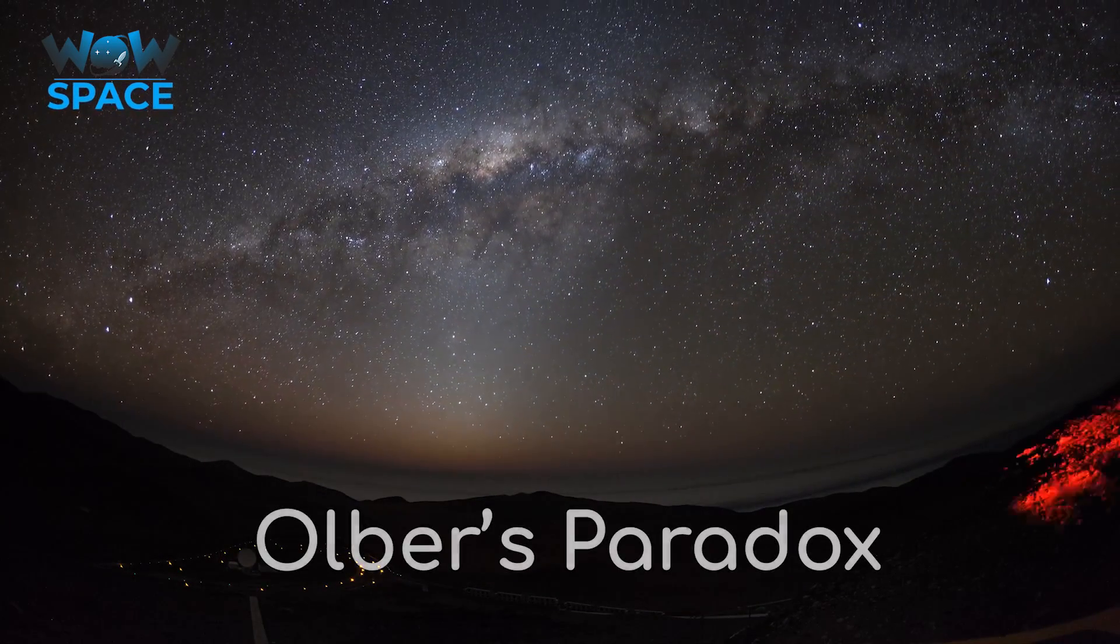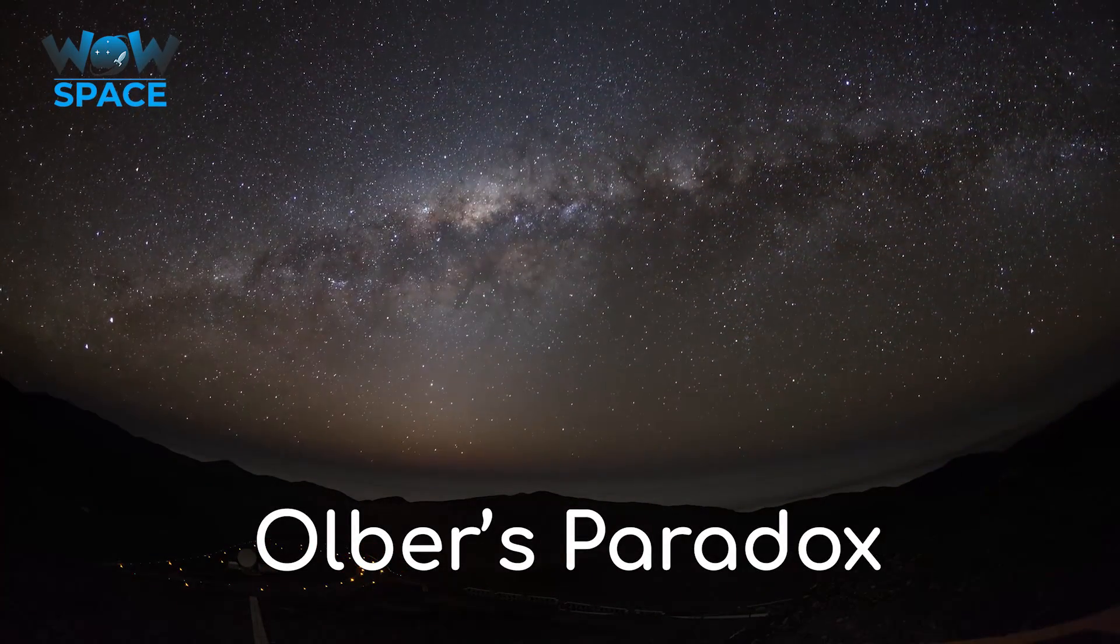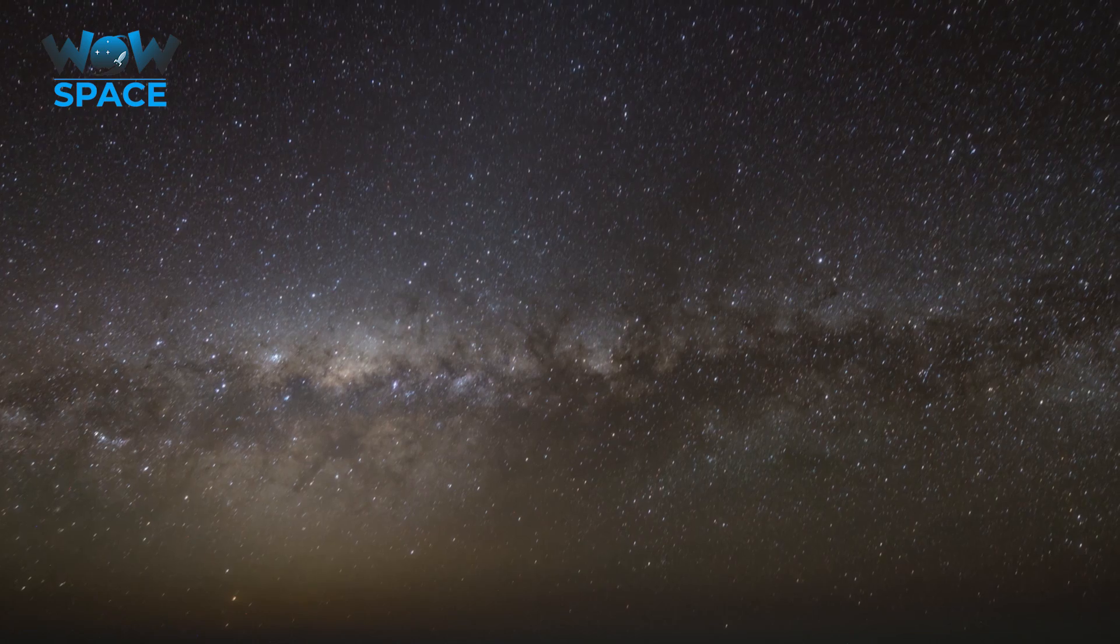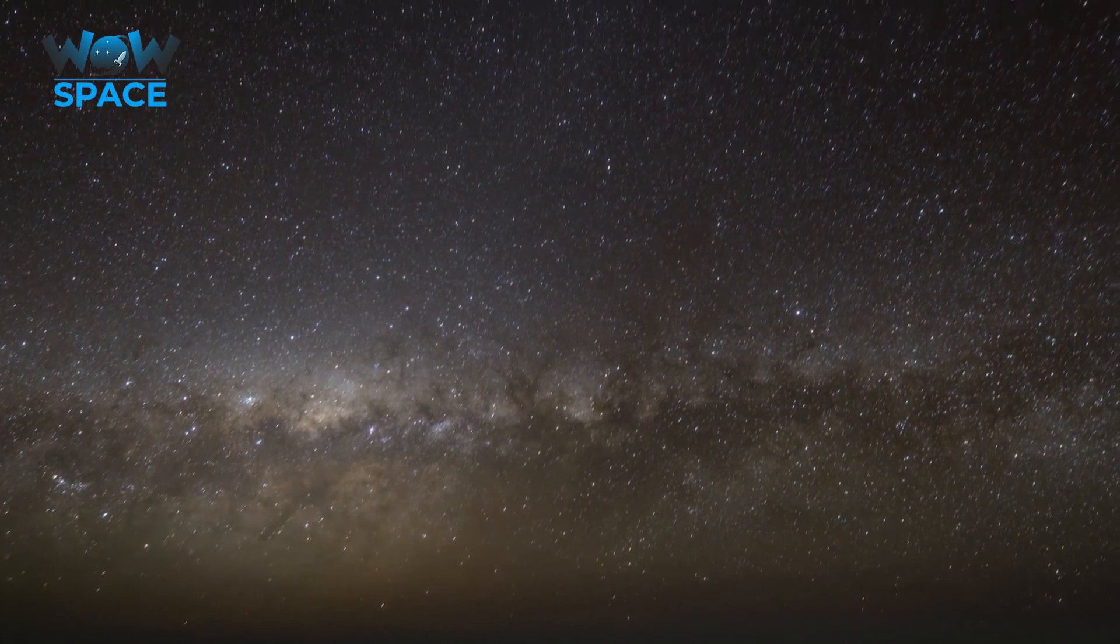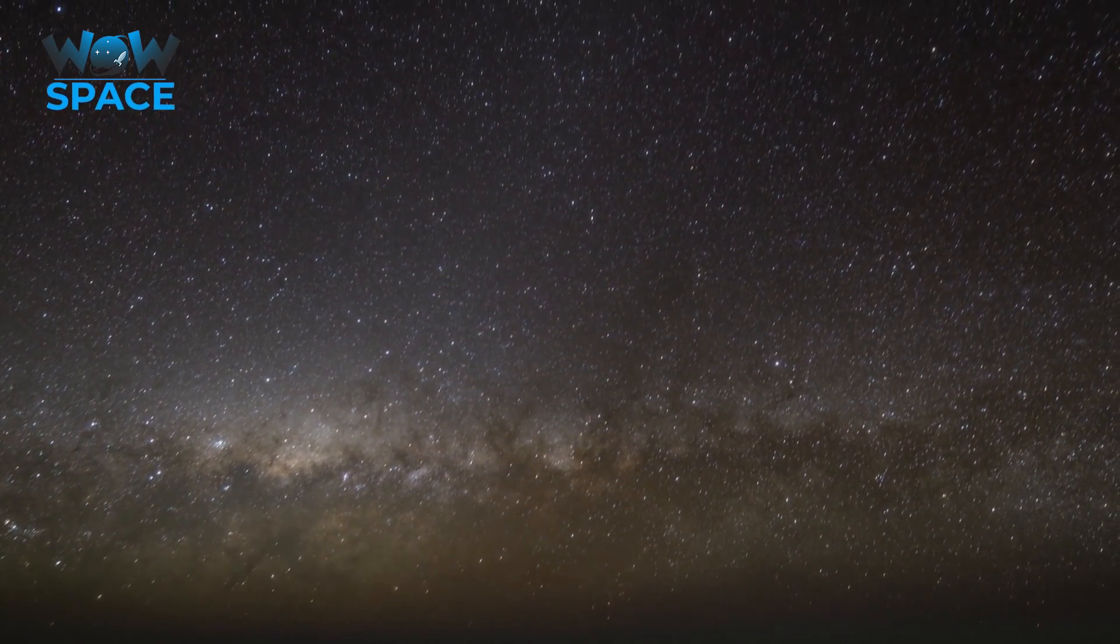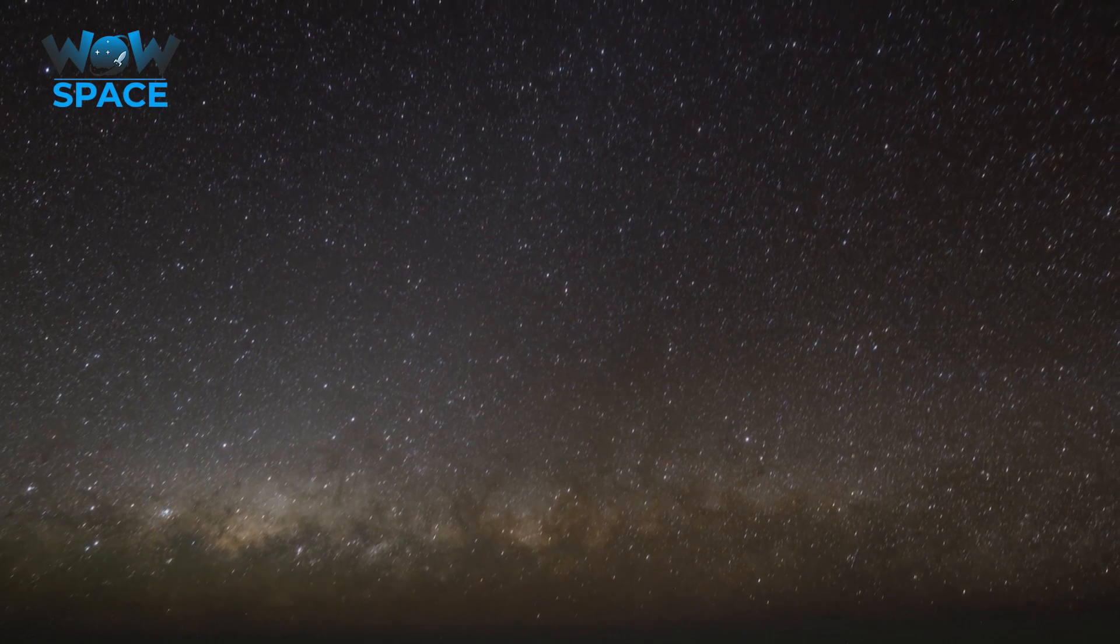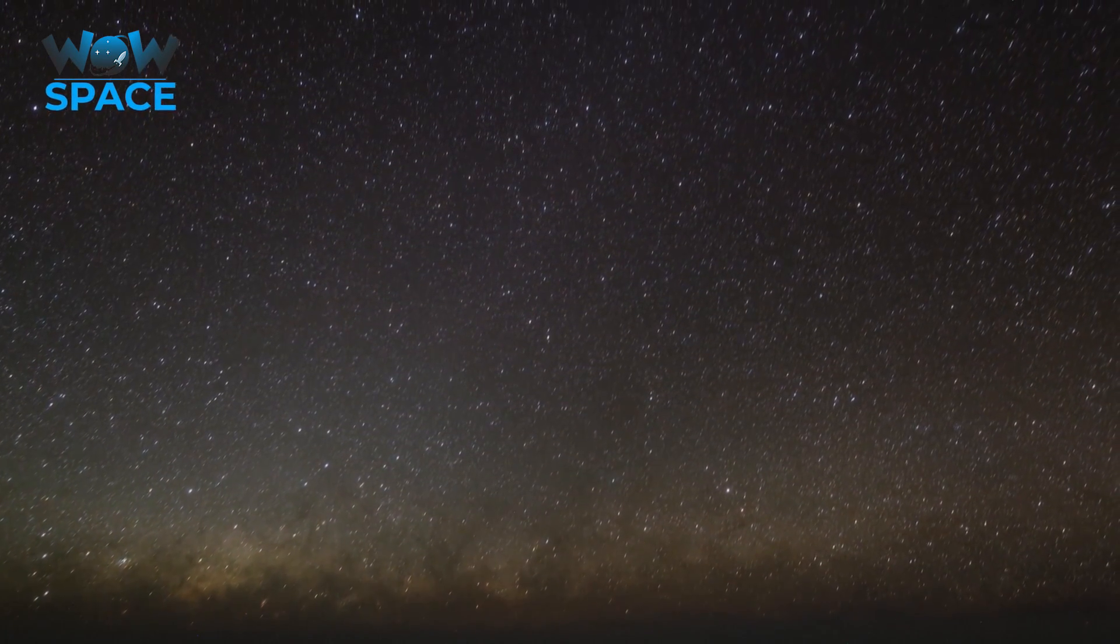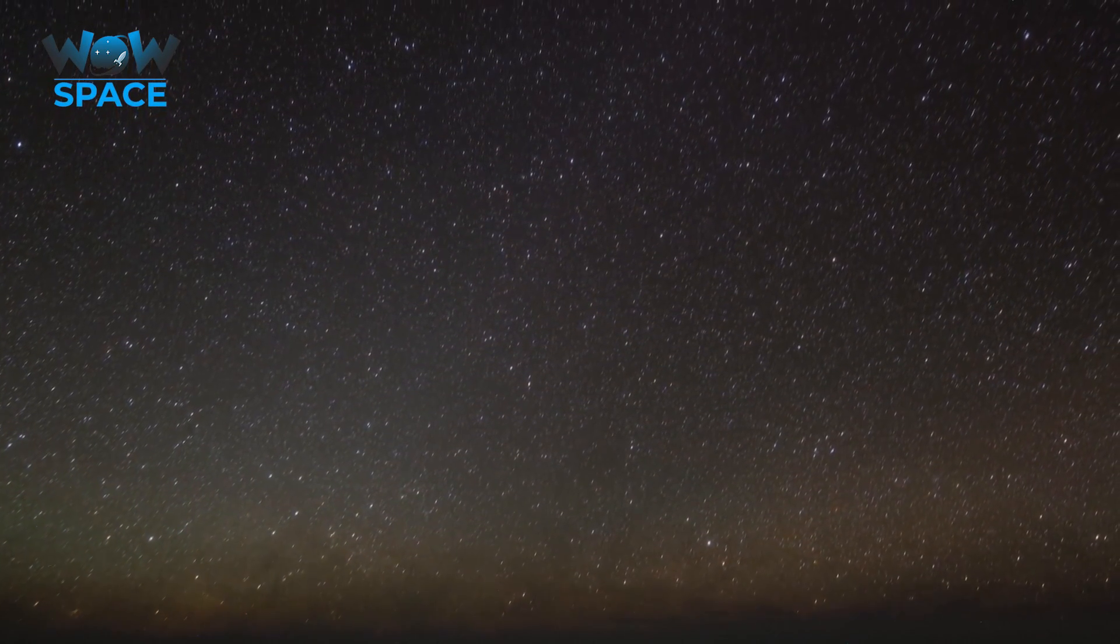Let's start with something known as Olber's Paradox. Some of you may answer the question of why space is black with, well, there's nothing in between the stars, so of course it would be black, there's no light source. In a finite universe, yes, that is true.